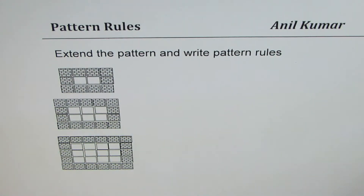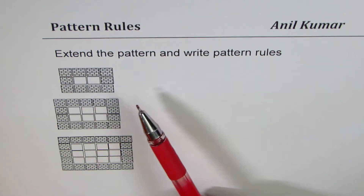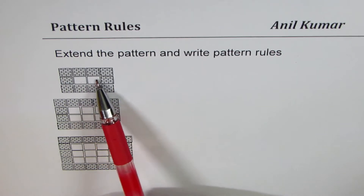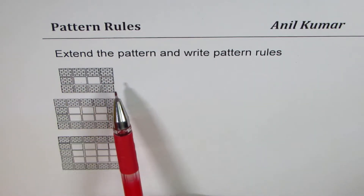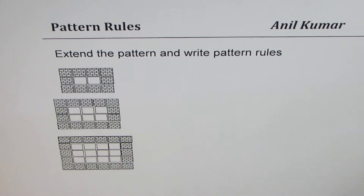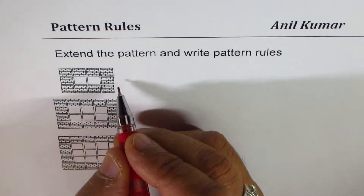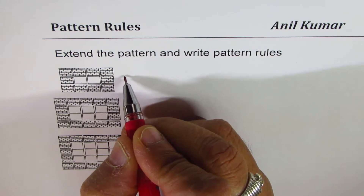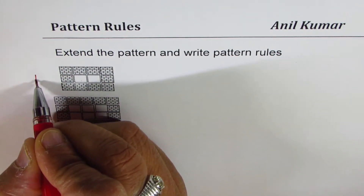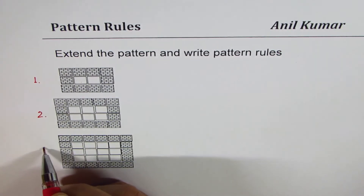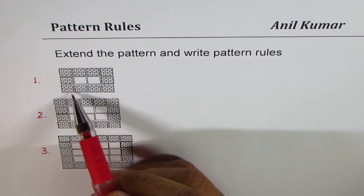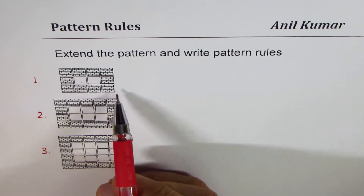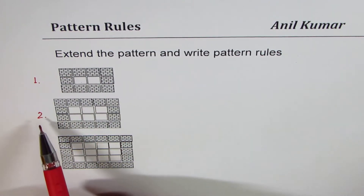I'm Anil Kumar sharing with you a very interesting pattern rule. The example before us has some bricks and windows — we have put a brick design here and inside, the white things are the windows. We have design number one, design number two, and design number three. In design number one we have few bricks and two windows.